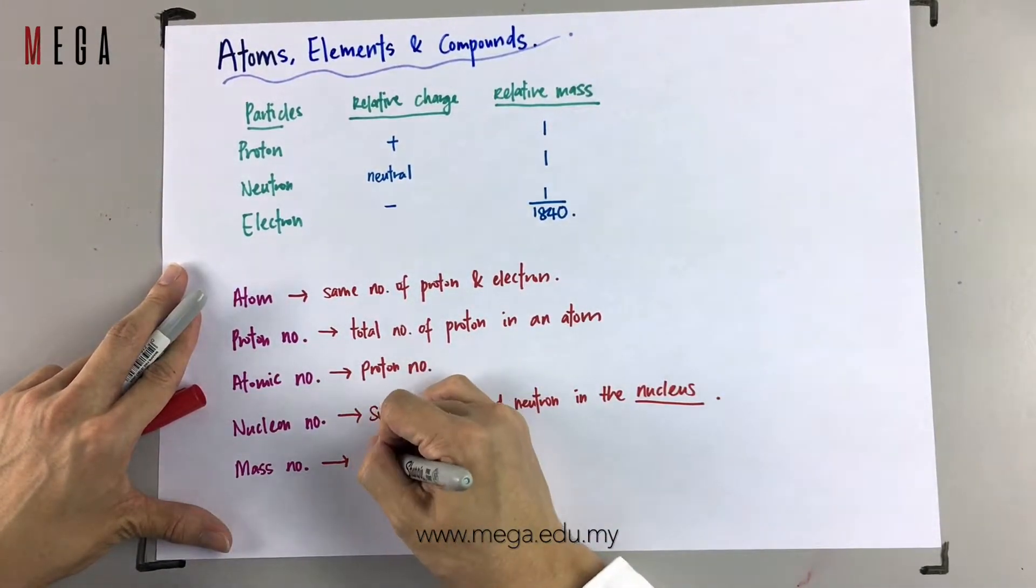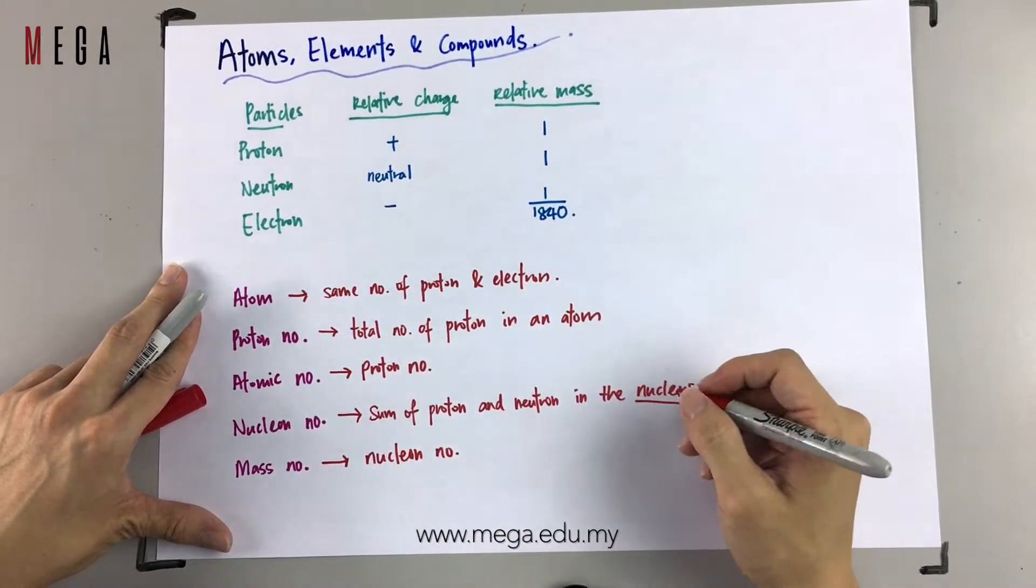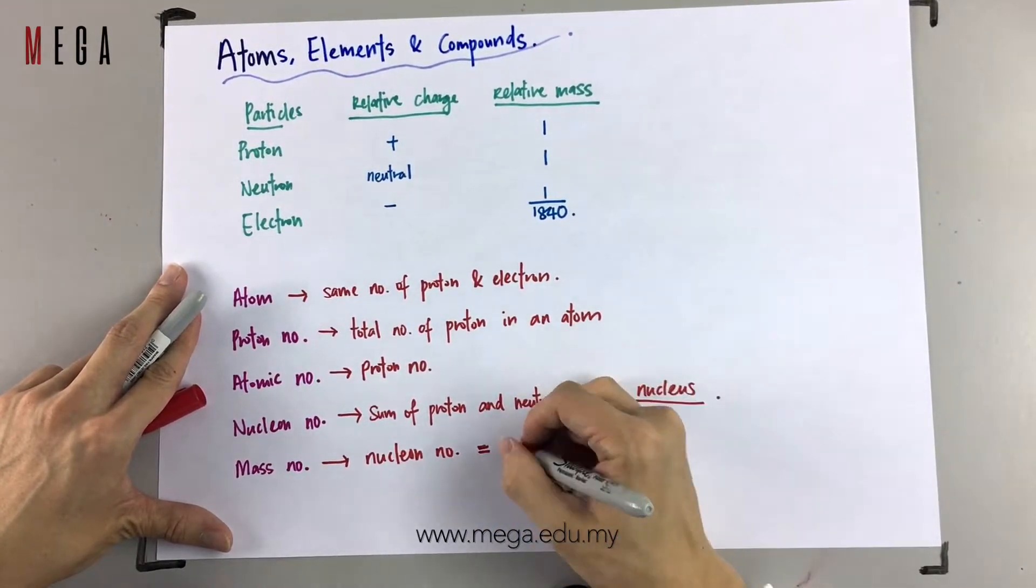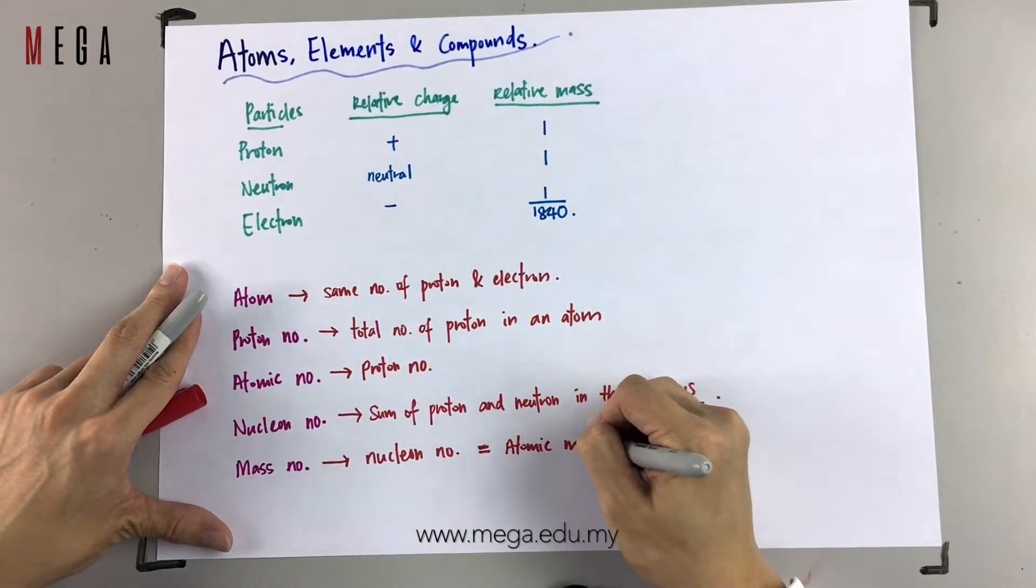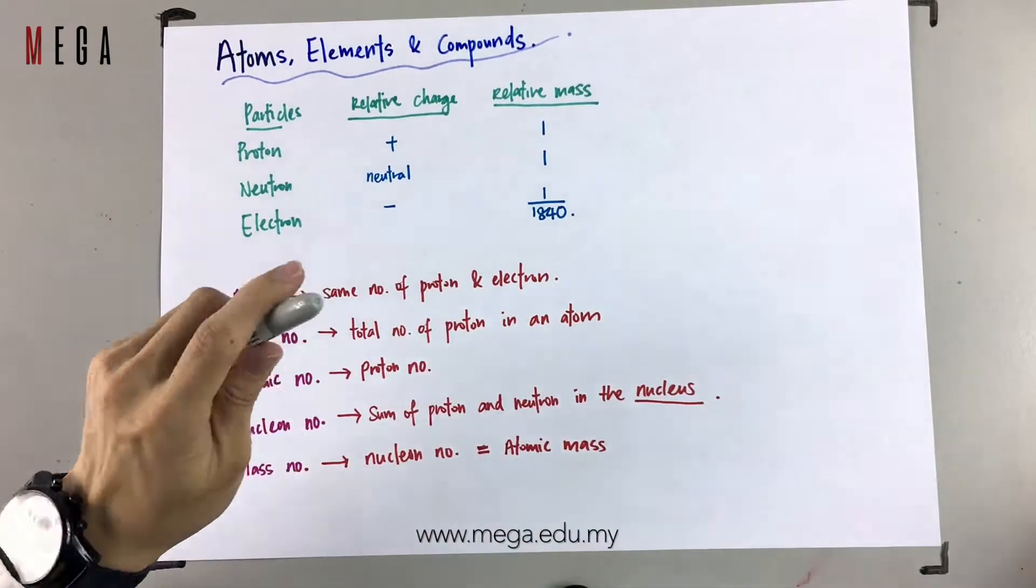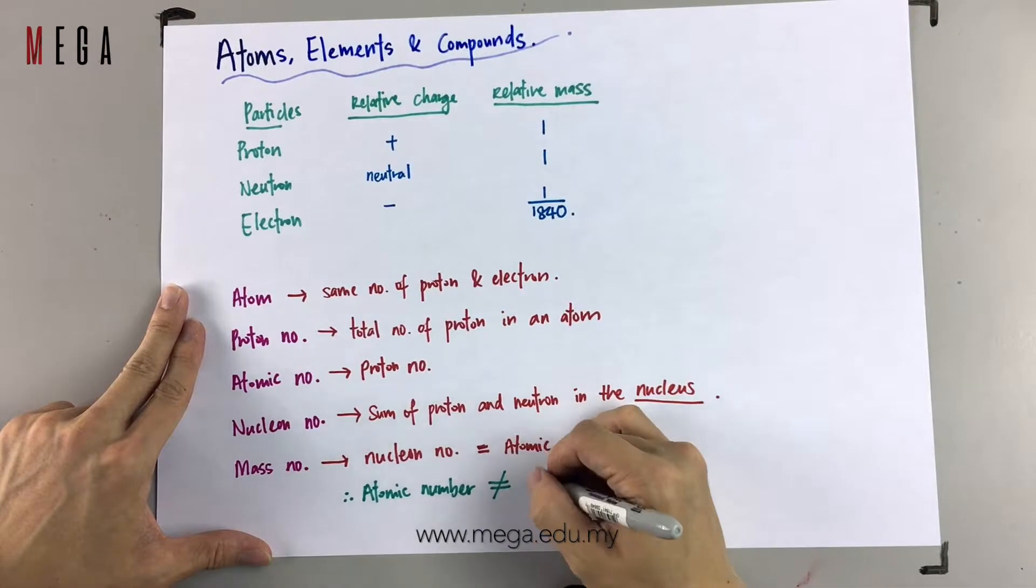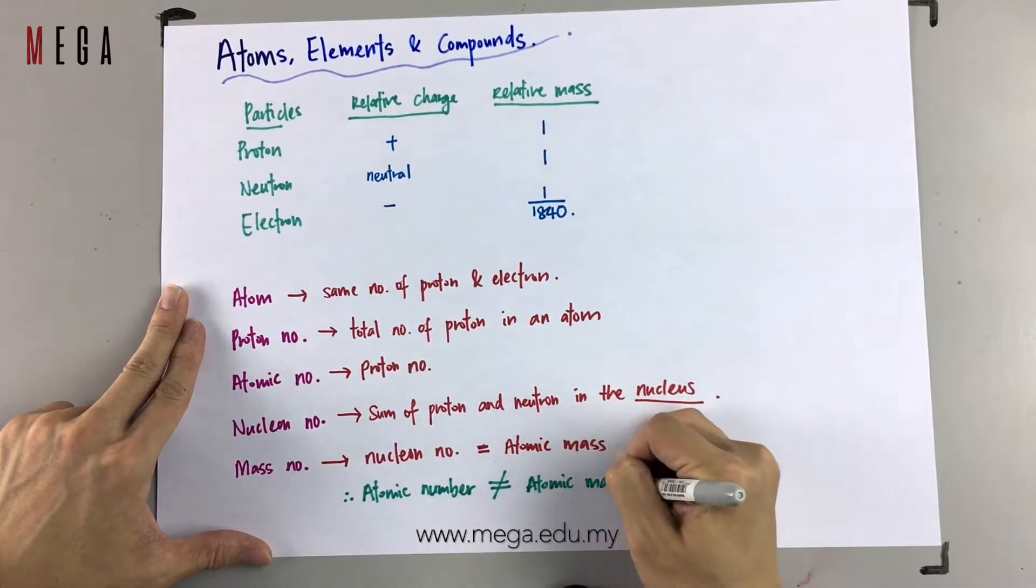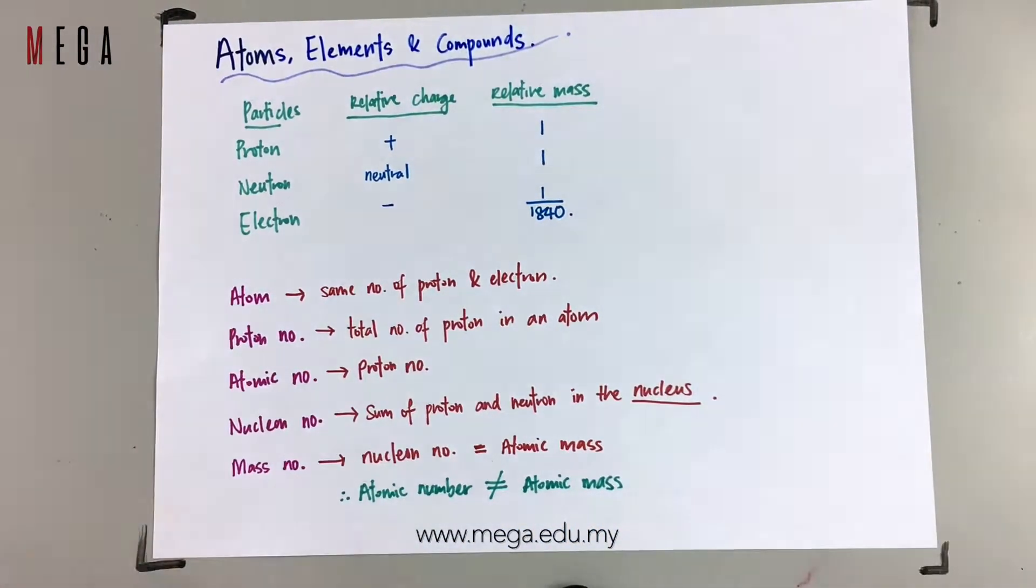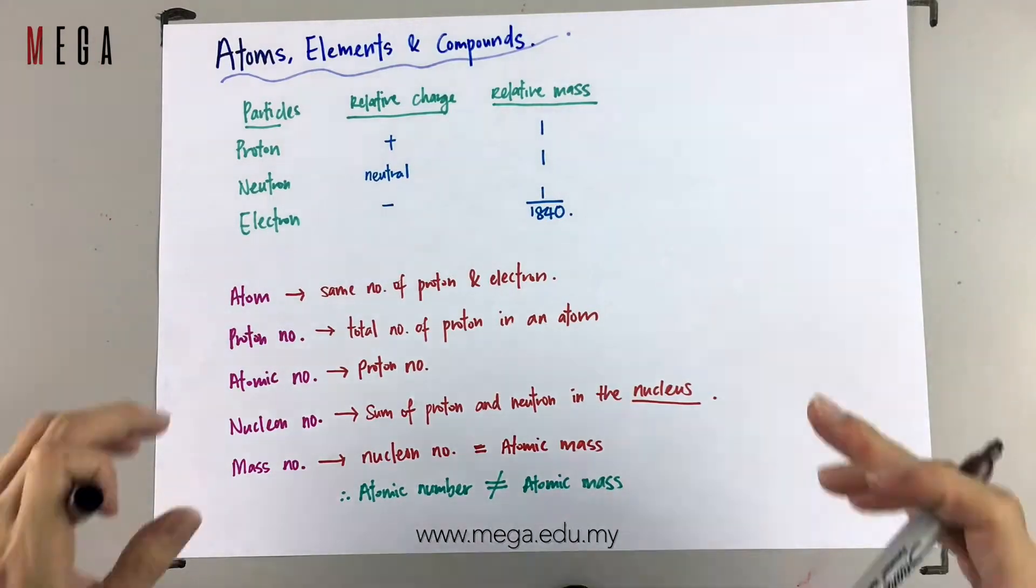Moving on to mass number. Mass number is the same as nucleon number, which is atomic mass. But bear in mind that atomic number is not equal to atomic mass. Atomic number basically means proton number; atomic mass means nucleon number. Be careful.